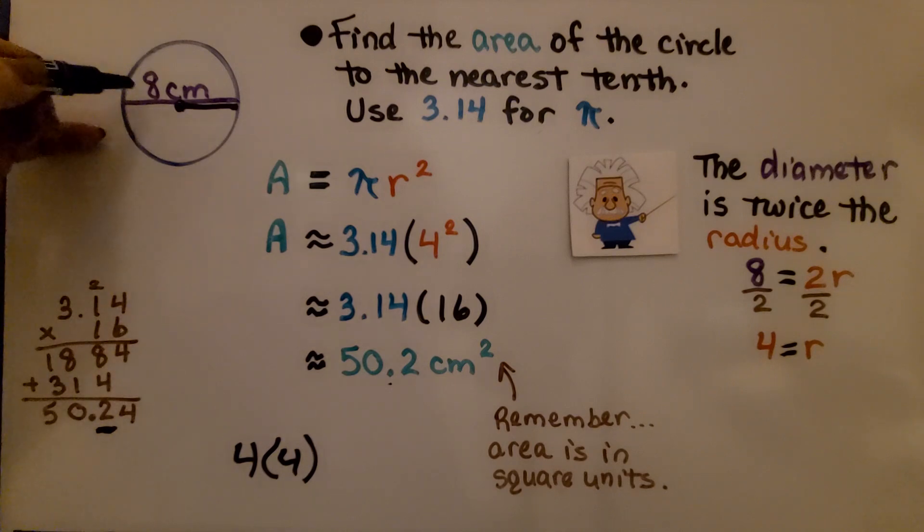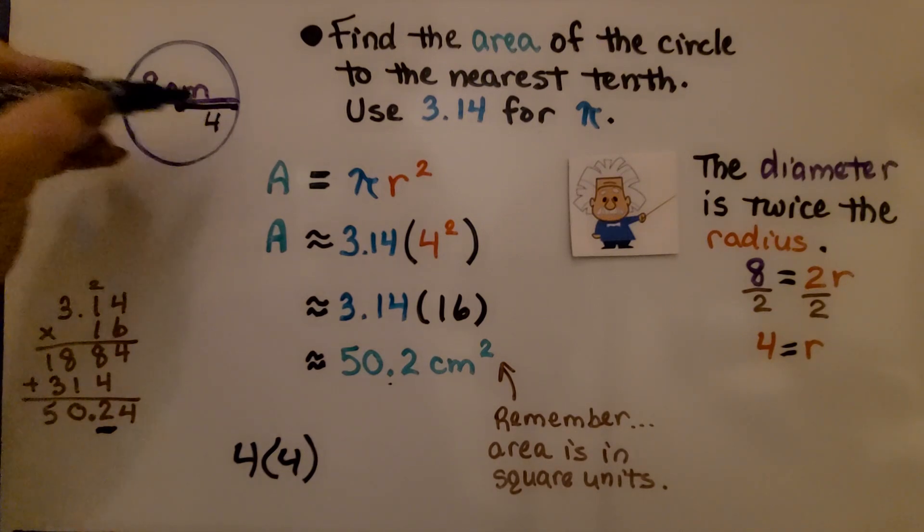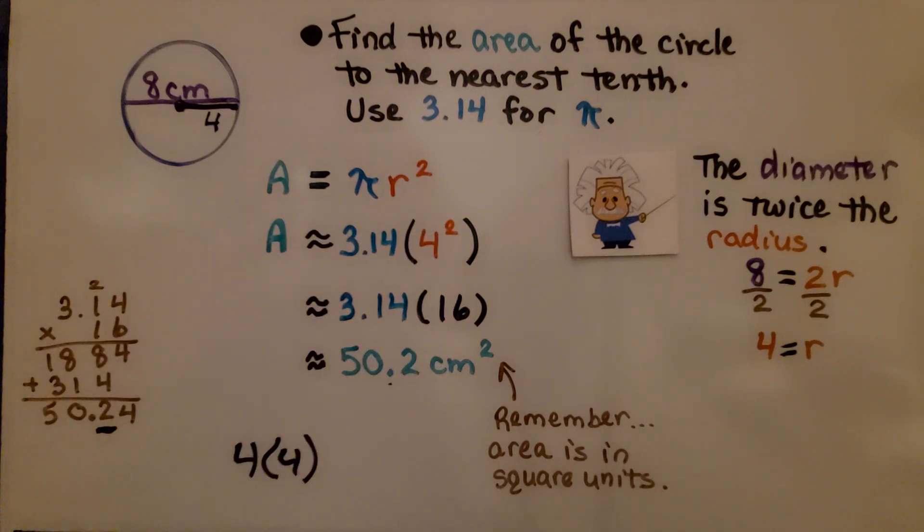So it's very important that if you see a diameter, you divide it by two, we get our four, and then we do four to the second power, which is 16.